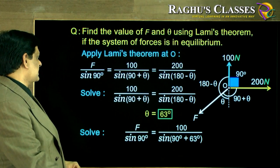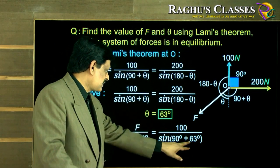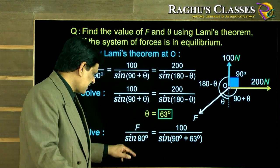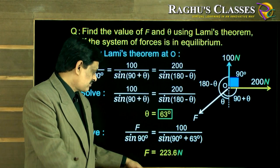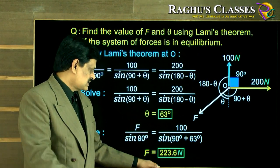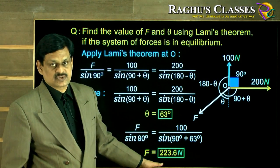So solving F by sine 90 equals 100 by sine of 90 plus theta, I placed here. So everything is known except F. So very easily you can reorganize this equation and find the value of the force, that is coming to be 223.6 Newton approximately.